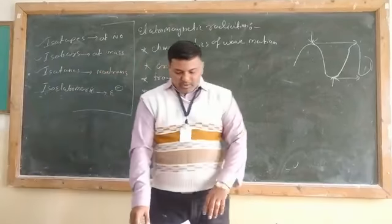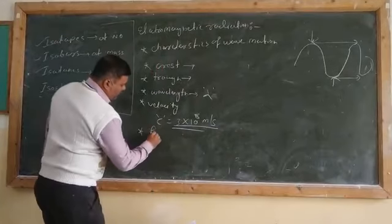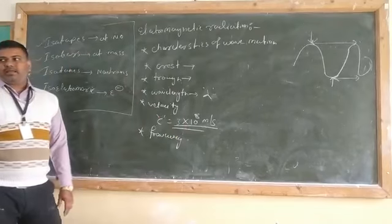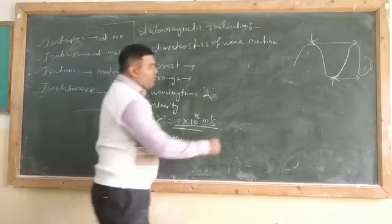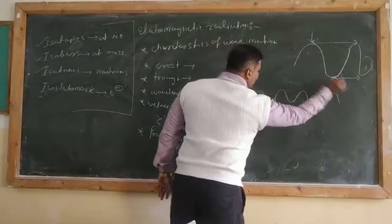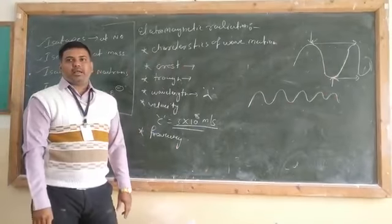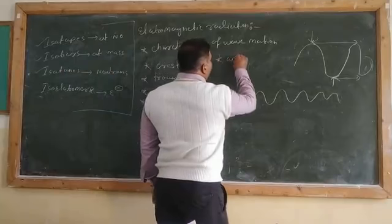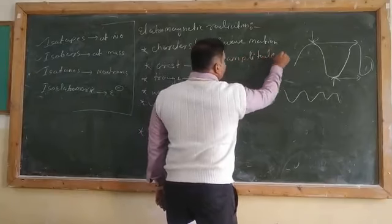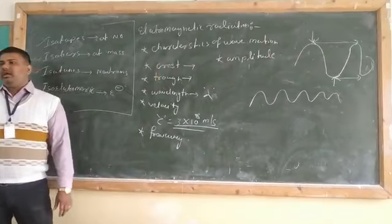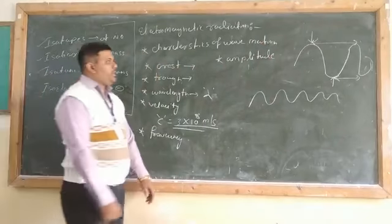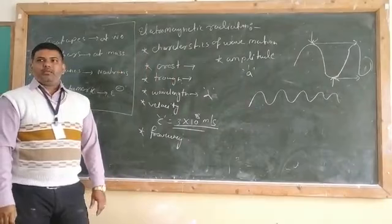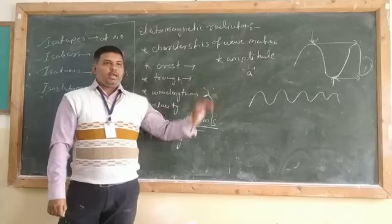We also learnt about frequency. Frequency is the number of oscillations taking place in one second. Then we learnt about amplitude. The height of the crest or trough is called the amplitude, and it is denoted by the letter A — note that it is a small 'a', not capital A as written in some textbooks. Please make that correction.